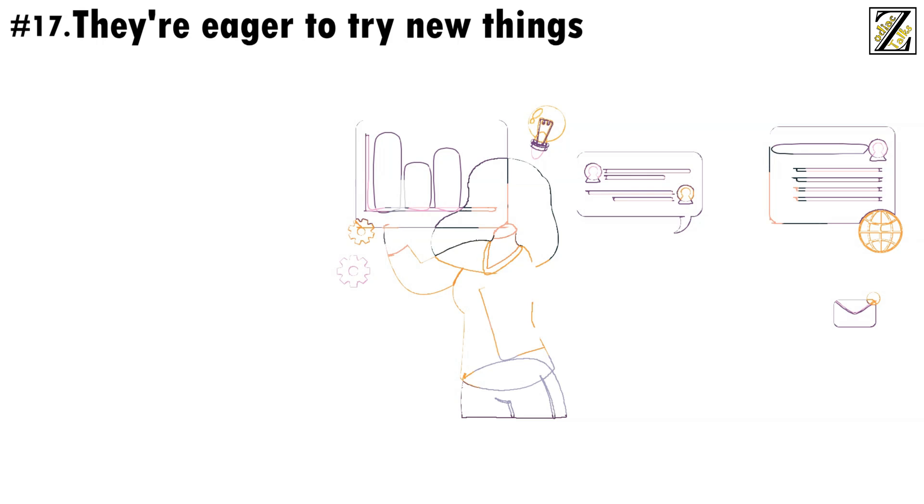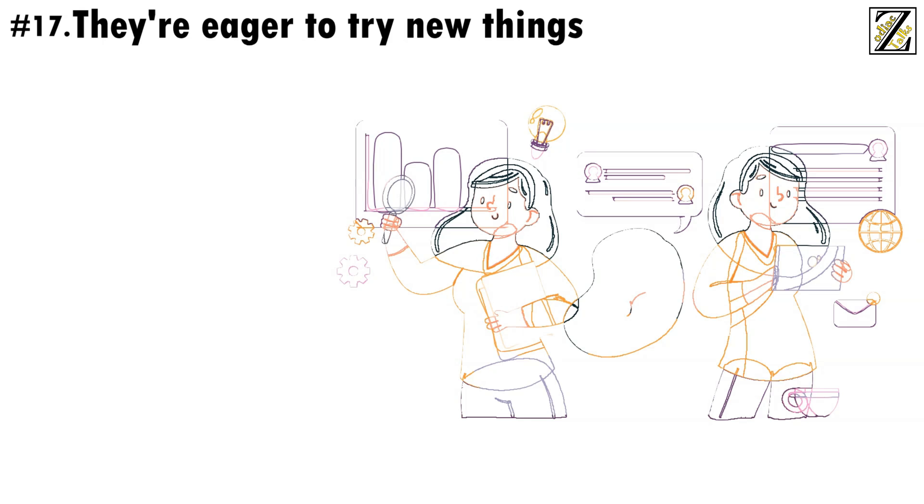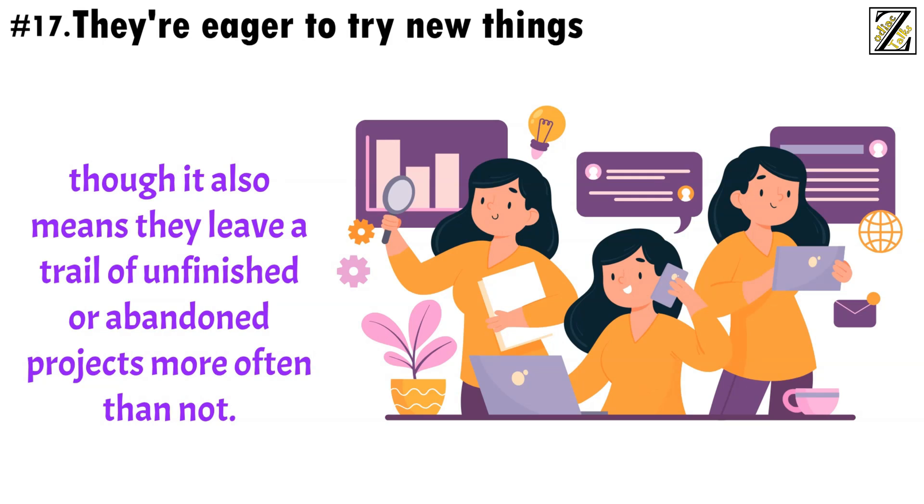Number 17, They're eager to try new things. Geminis can't stand being bored, which means they're always looking for new hobbies and activities to keep their life interesting. This makes them excellent at multitasking and managing different activities at once, though it also means they leave a trail of unfinished or abandoned projects more often than not.